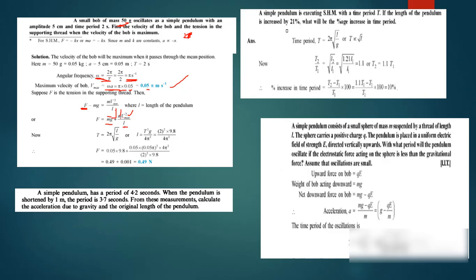We can find the length because the time period is given by 2π√(L/g). We have the time period, so we can get the length. We substitute: 0.05 kg times gravity, plus the mass times velocity squared divided by the length. After doing the calculation, you get the tension to be 0.49 N.